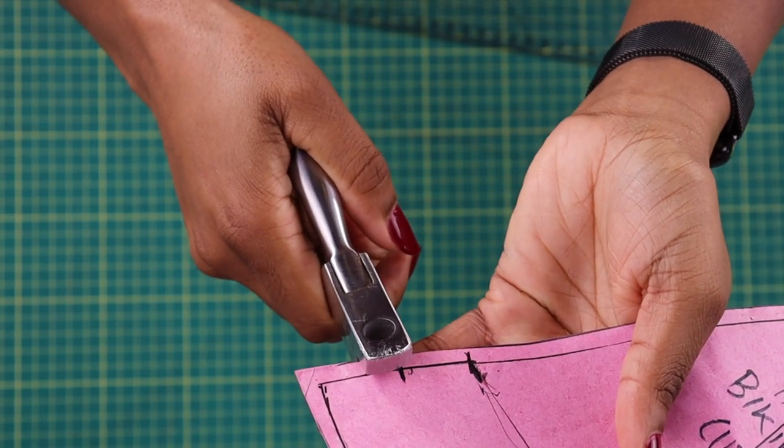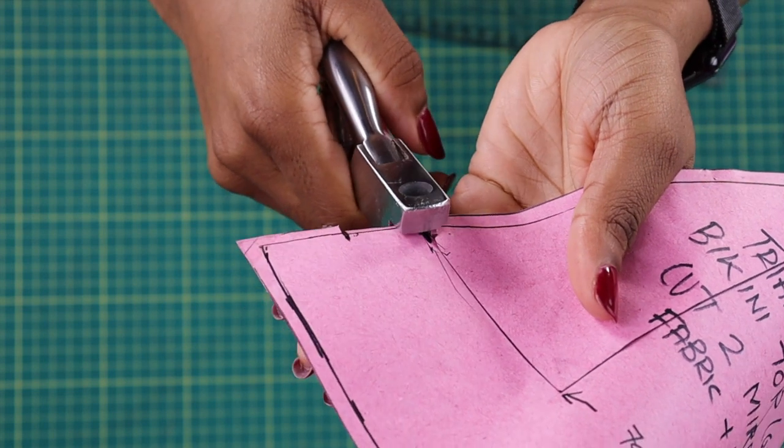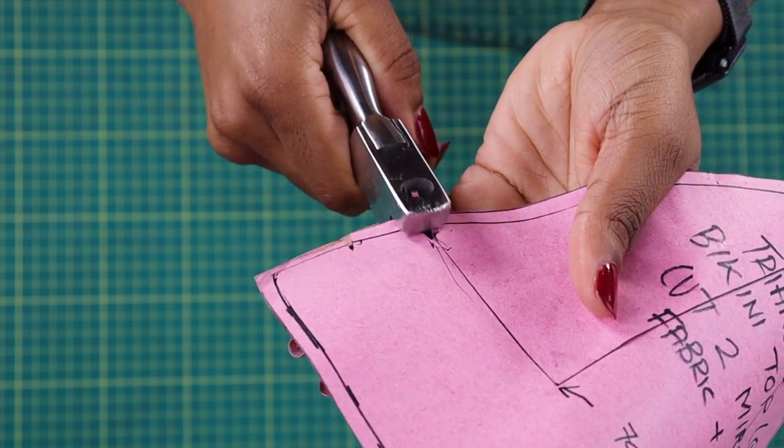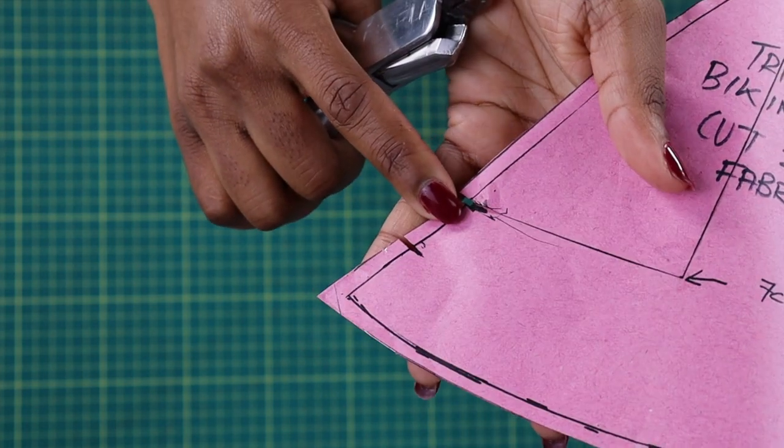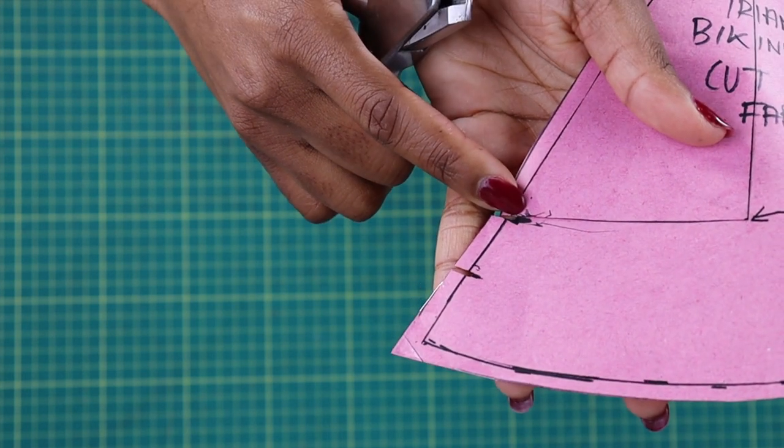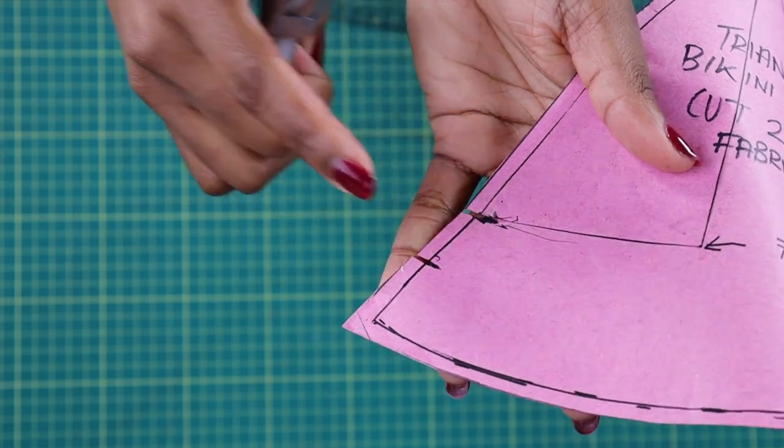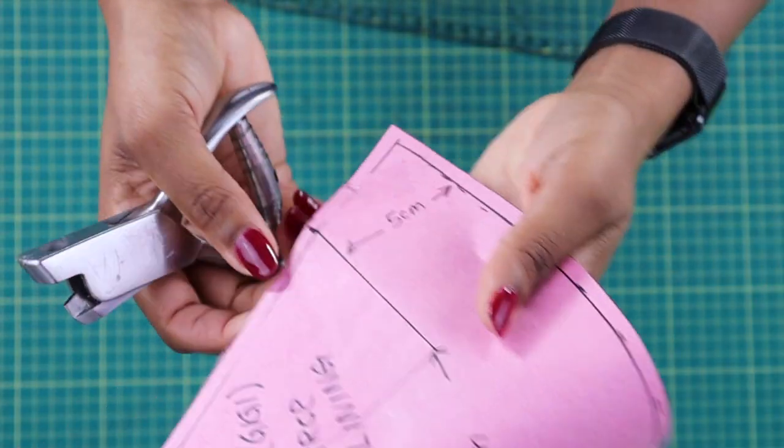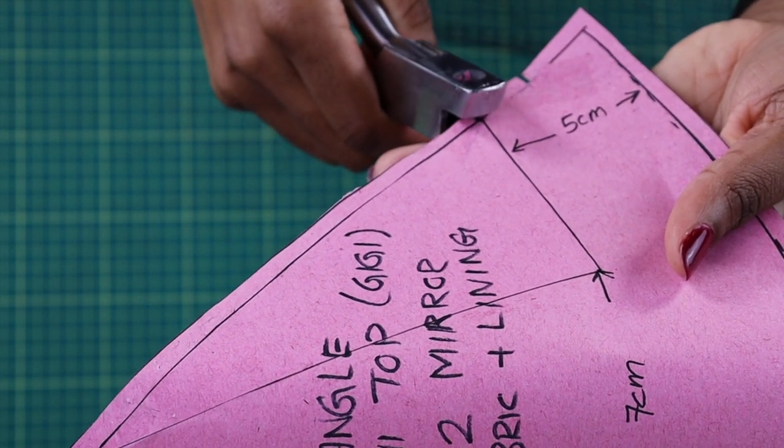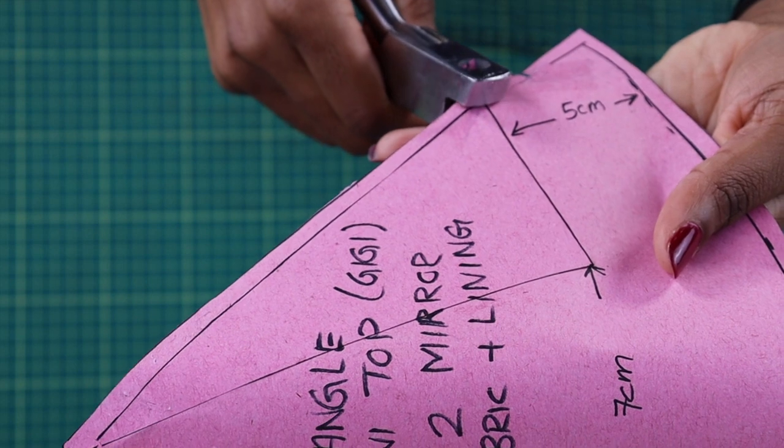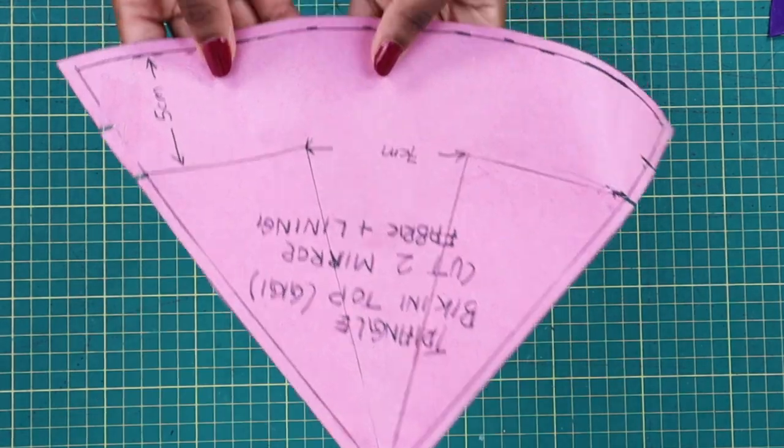So this notch is two and a half centimeters. From here, the original cap, go down two and a half centimeters.